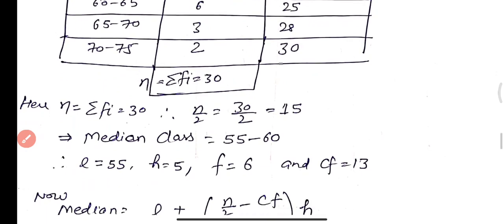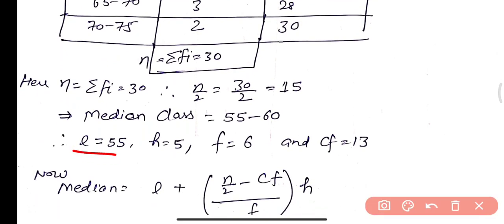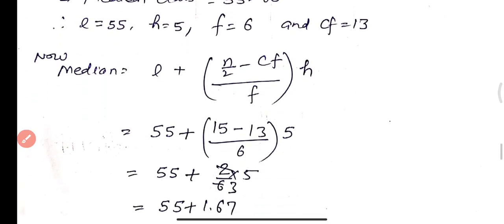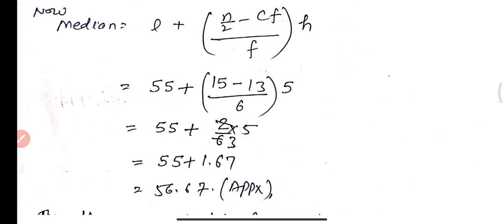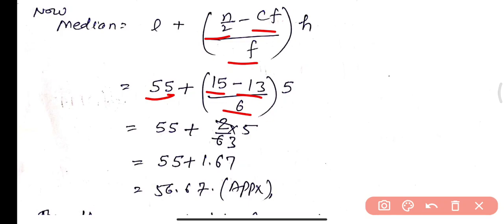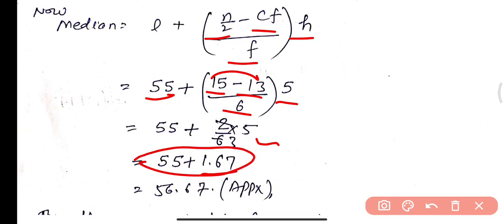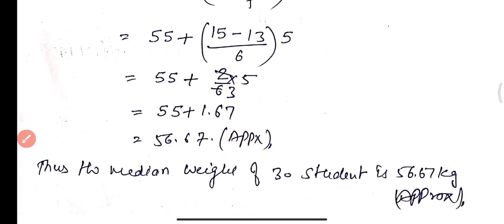Putting all values into the formula: Median = l + [(n/2 − cf) / f] × h = 55 + [(15 − 13) / 6] × 5 = 55 + [2/6] × 5 = 55 + 1/3 × 5 = 55 + 5/3 = 55 + 1.67 ≈ 56.67. Thus the median weight of 30 students is approximately 56.67 kg. This concludes worksheet number 64.